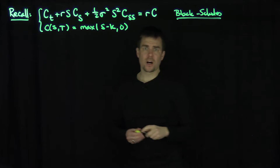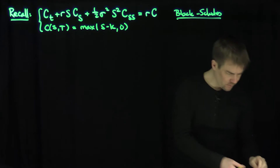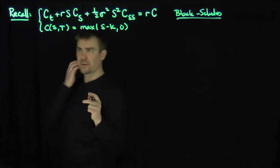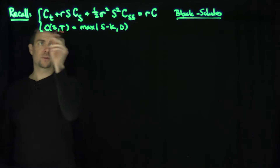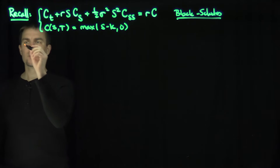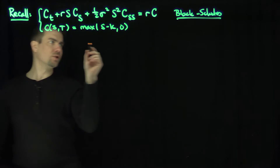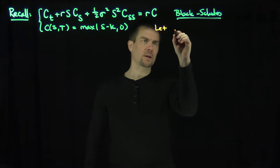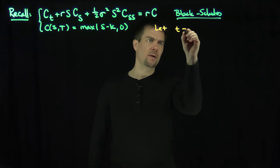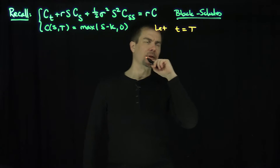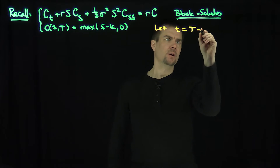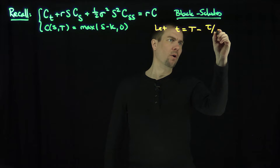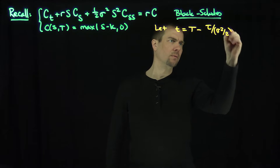What I'm going to do now is make a couple changes of variables. The first change of variable is for the time parameter. We're going to let t equal capital T, the expiration, minus tau over sigma squared over 2.